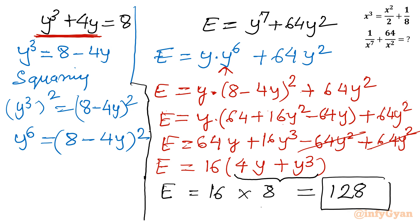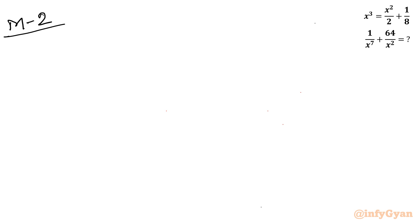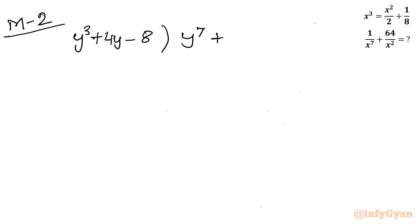Now let us consider Method 2. Here I will use the Remainder Theorem, which states that if we divide our expression by the equation, the remainder will be our answer. So we will divide y⁷ + 64y² by y³ + 4y − 8, and the remainder will be our answer.